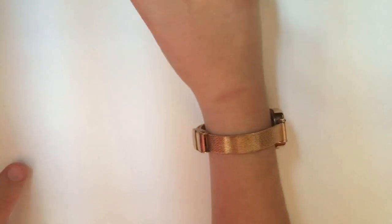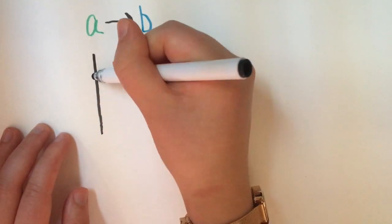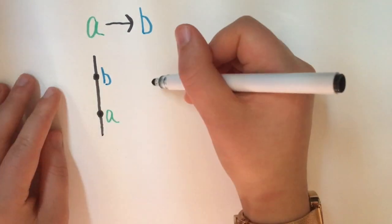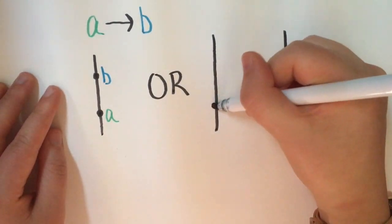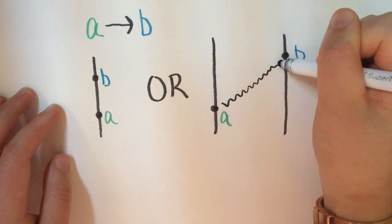He first introduces the concept of partial ordering. Let's say A and B are each events in a process. We'll use an arrow to say that A happened before B. This might be true if A happens before B on the same process, or if A sends a message from one process to a receiving event B on a different process.